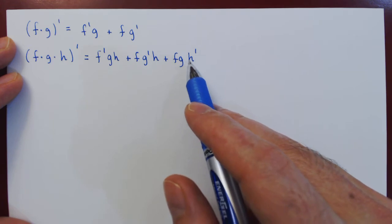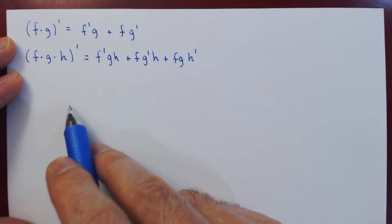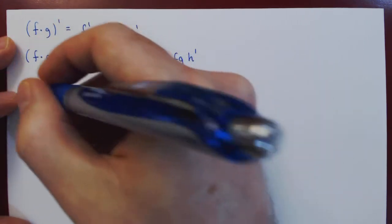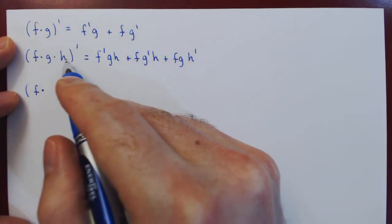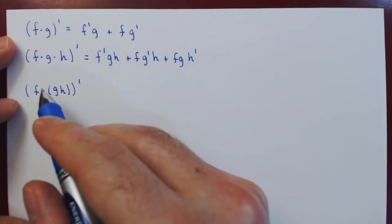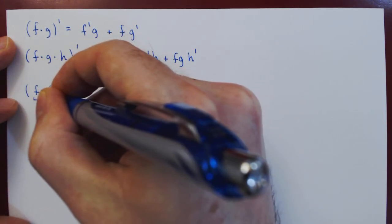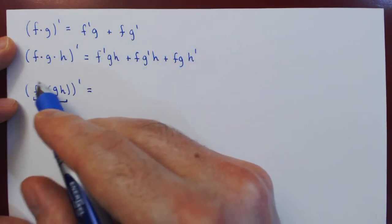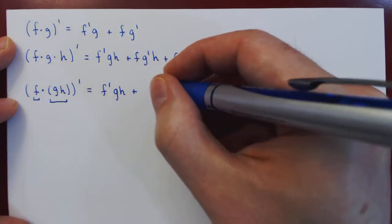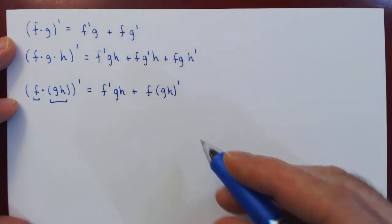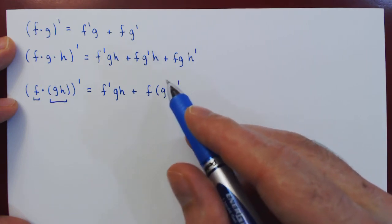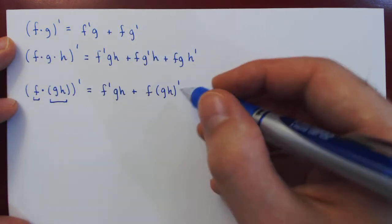This is the extended product rule, and you can easily see how this works out over a product of four functions, five functions, and so on. Now let's prove this using the single product rule. The idea is remarkably simple: we look at f times, and now we view g times h as a single function g h. We've reduced these two products to a single product between f and g h, so we can apply the usual product rule: derivative of the first function times the second function g h, plus the first function f times the derivative of g h.